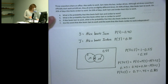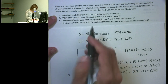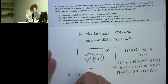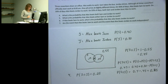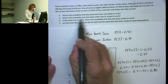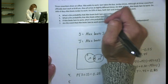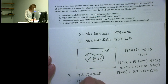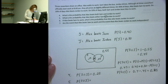Question 4 asks: what is the probability that Alex beats both Sam and Jordan? That is the probability of the intersection, which we found to be 0.25. Question 5 asks: what is the probability that Alex beats either Sam or Jordan to work? In mathematics, 'or' is inclusive, including the possibility of both, so that is the union, which is 0.45.